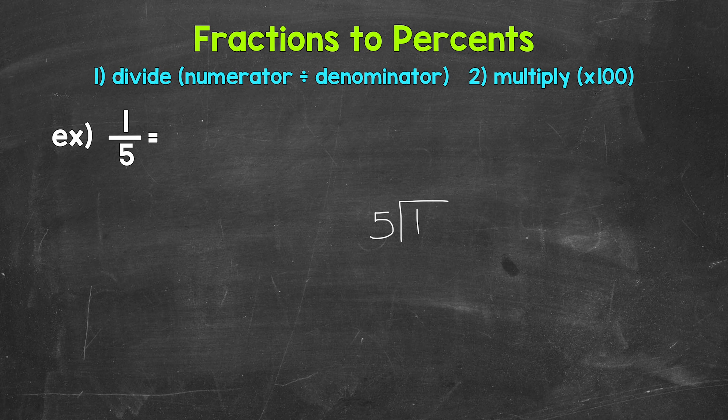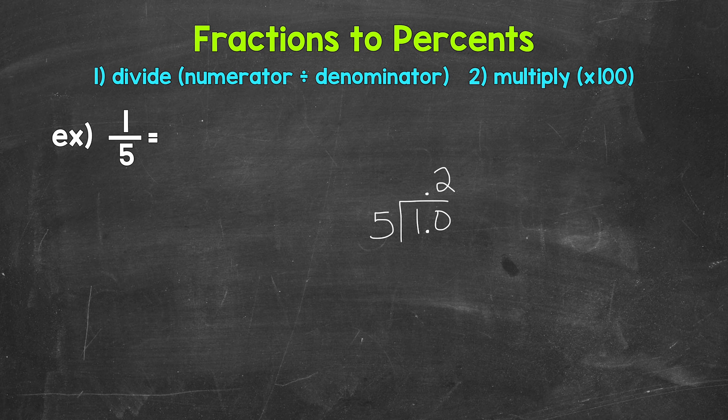How many whole groups of five in one? Well, we can't do that, so we need a decimal and a zero in order to work through this problem. Once we have the decimal and the zero, we can bring the decimal straight up into where the quotient, the answer, will be. And now we can think of this as 10 divided by five, which is two. So we put the two above the zero — make sure that two is above the zero, since we used that zero and thought of this as 10 divided by five.